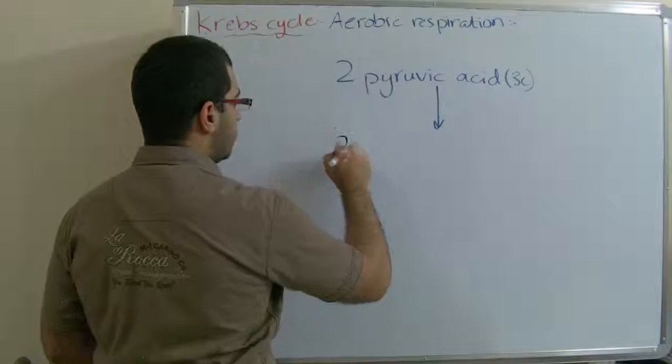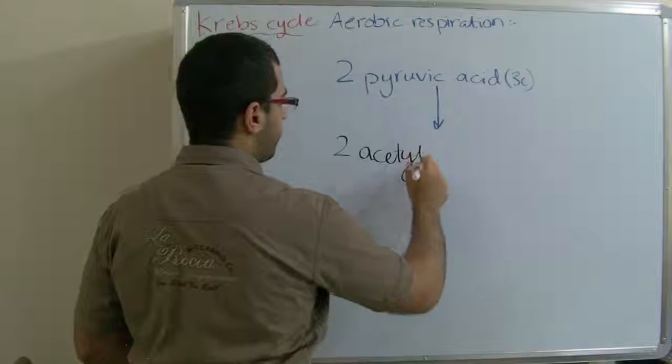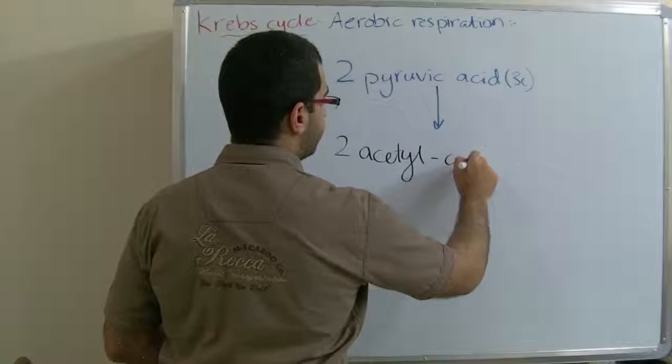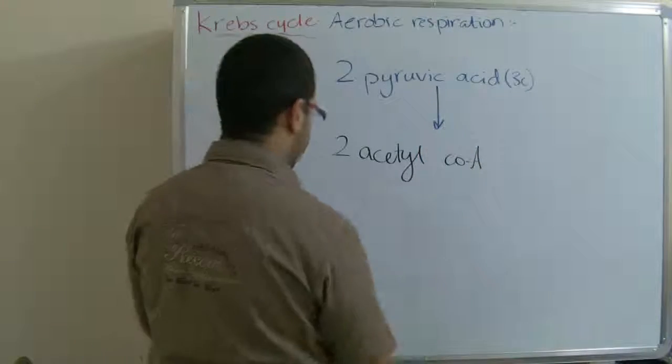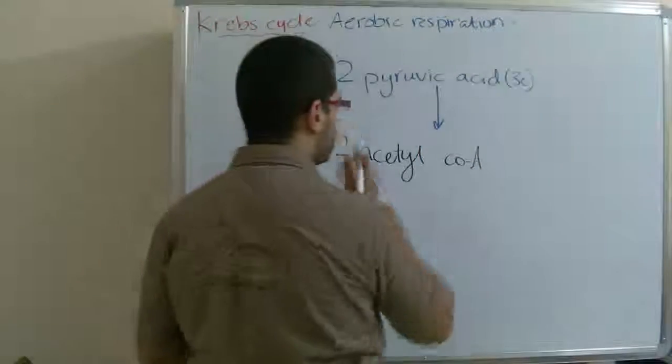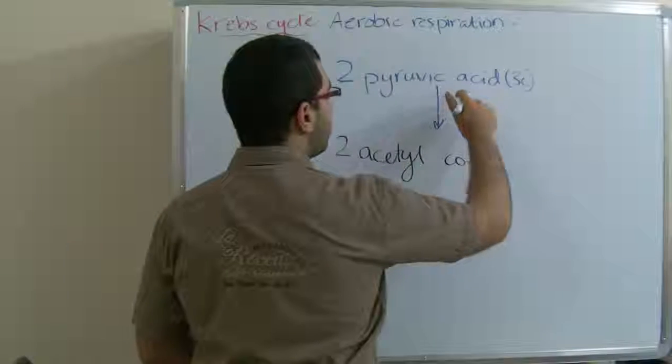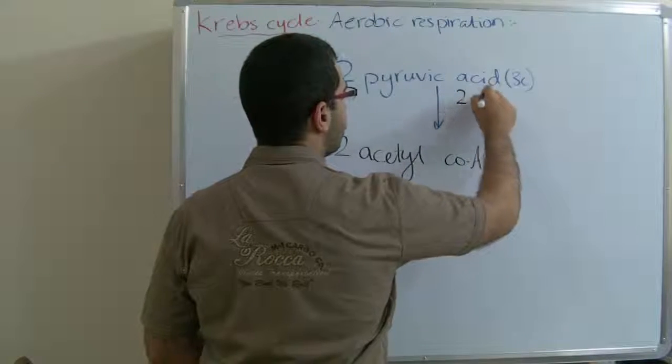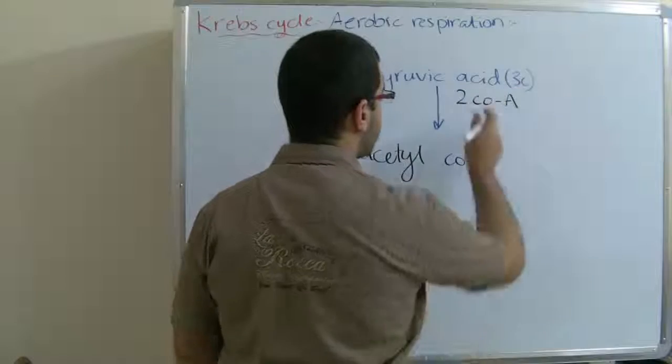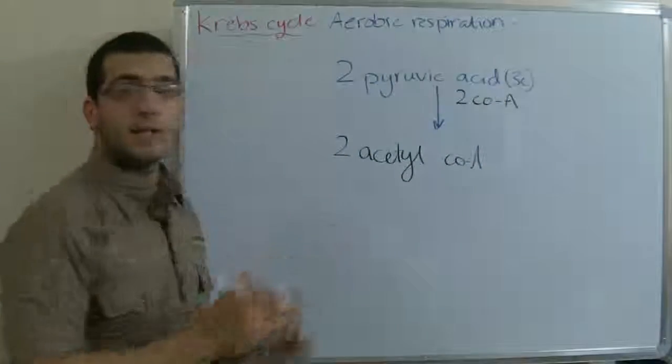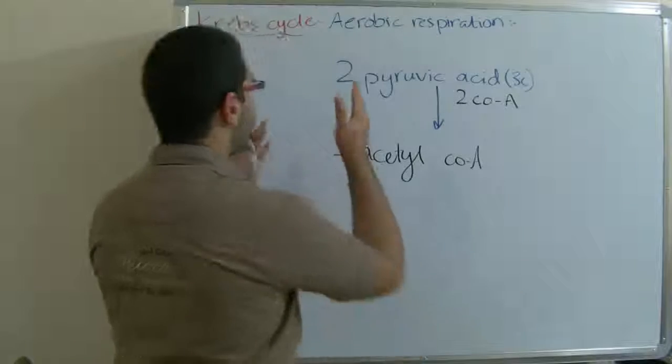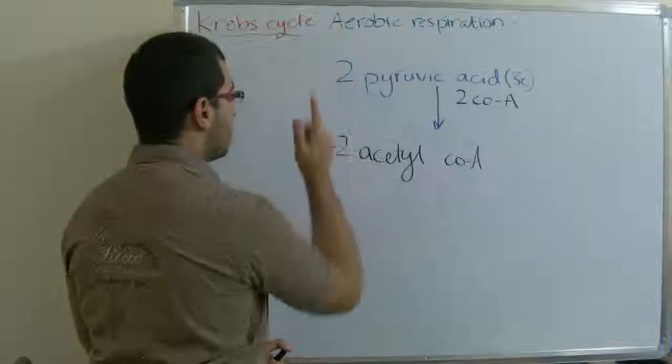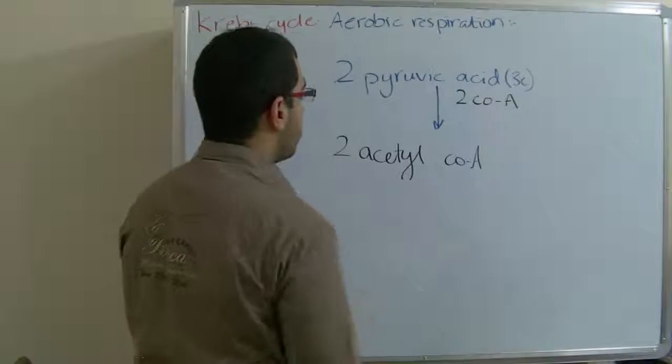We have here two CoA. CoA is a coenzyme which is used to reduce the pyruvic acid molecules into two Acetyl CoA.